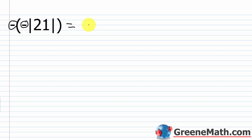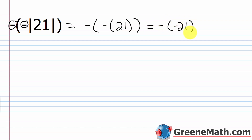Now: the opposite of the opposite of the absolute value of 21. Count the symbols outside the absolute value bars — there are two, which is even, so the result is positive. Step by step: the absolute value of 21 is 21; the opposite of 21 is negative 21; and the opposite of negative 21 is positive 21. The shortcut: even number of outer symbols means a positive result, odd means negative.